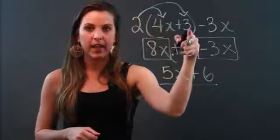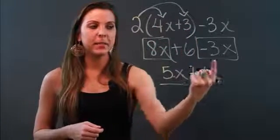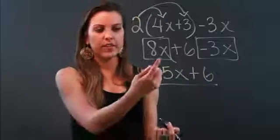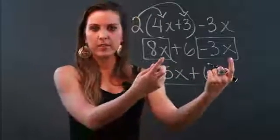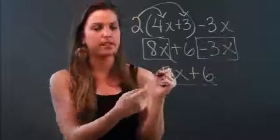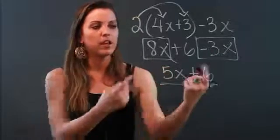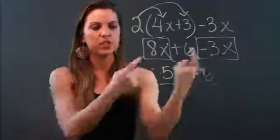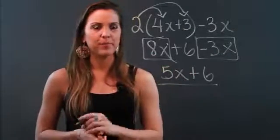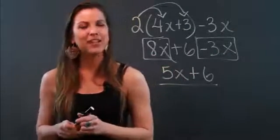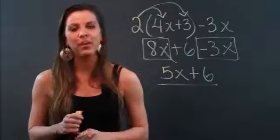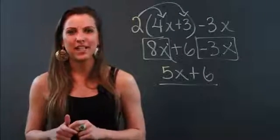To distribute, you multiply the number outside the parentheses by each term inside. To combine like terms, you look for anything with the same variable and same exponent — these both have an imaginary exponent of one, that's why I say same exponent — then combine their coefficients and keep their variable. My name is Maria and I just showed you how to do the distributive property and combine like terms.